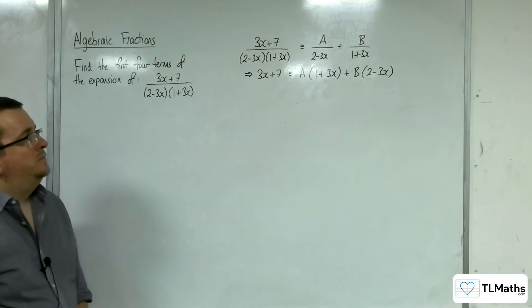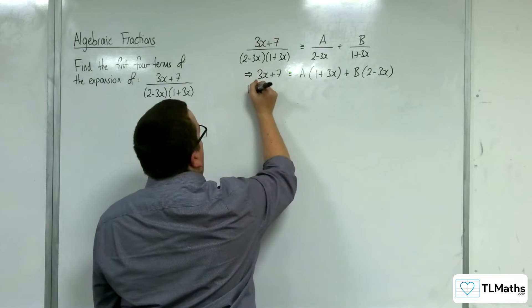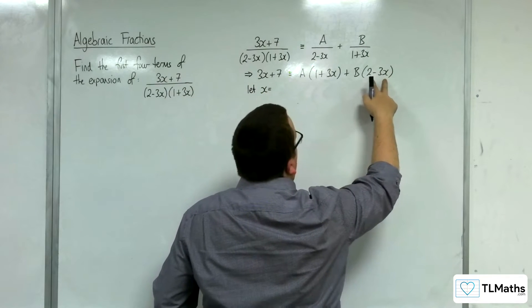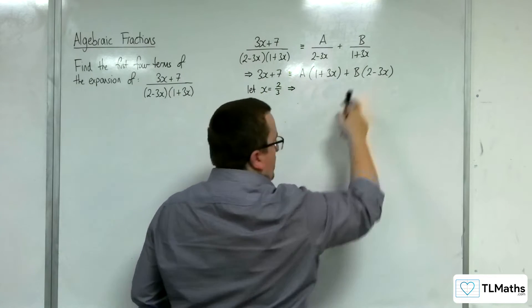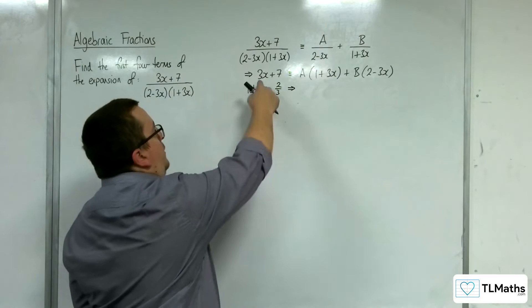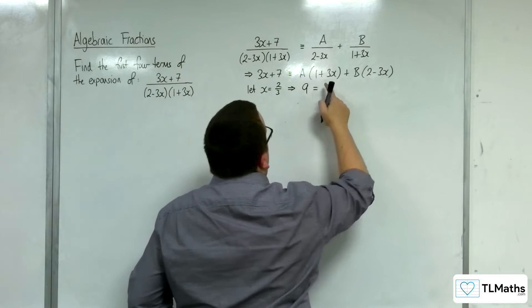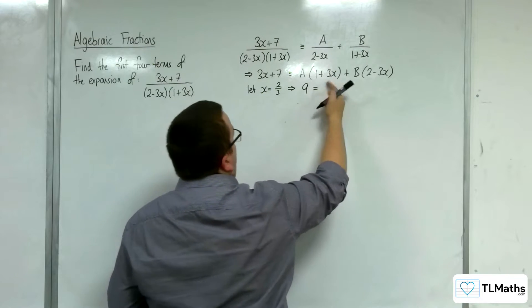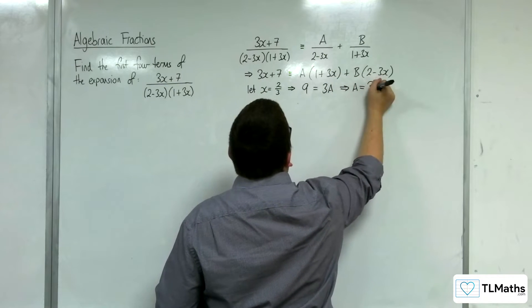Now choose values of x to knock out these brackets. If we let x = 2/3, we can knock out that bracket. So 3 × (2/3) = 2, plus 7 is 9. And here we've got 1 + 2 = 3, so 9 = 3A, which means A = 3.